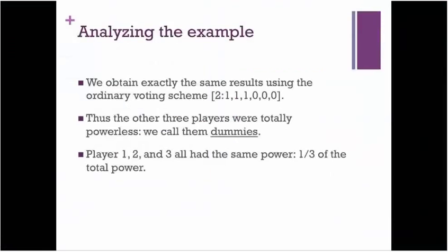So to repeat that, we obtain exactly the same results using this new simplified voting scheme. And here's how we might record it now. The quota now is simply two. It takes two votes to pass something. And player one, player two, player three each get one vote while the remaining players, four, five, and six, get zero votes. So those three players obviously are totally powerless. They can never have any effect on the outcome of the vote. And for that reason, we're going to call them dummies. That's the actual technical term that's used here. They are said to be dummies. And player one, player two, and player three all had the same power. They had one third of the total power. If you think again of that pie, it's as if each one of them had been given one third of the pie.